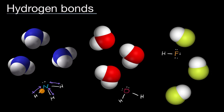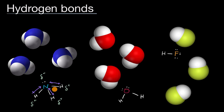The more electronegative atom is going to hog the electrons — the electrons are going to spend more time around that atom. So that end of the molecule is going to have a partial negative charge, and then the ends with the hydrogen are going to have partial positive charges. If you added these dipole moments, you would have a net dipole for the entire molecule. So we are dealing with polar molecules.